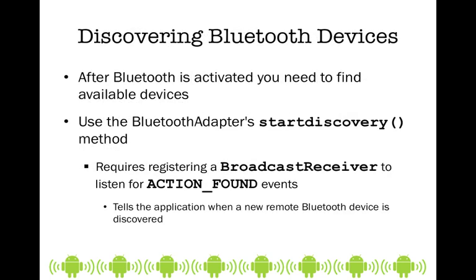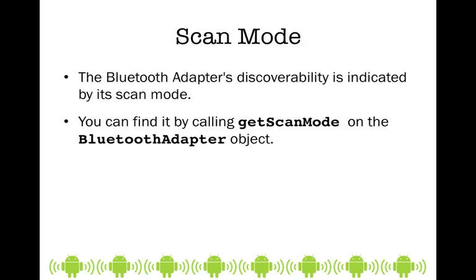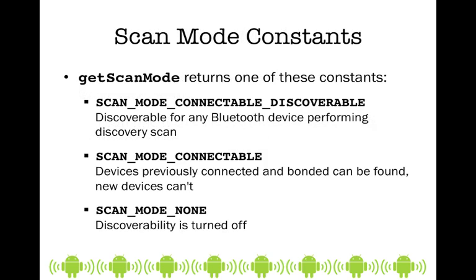Once Bluetooth is turned on, we need to find other devices. We use the Bluetooth adapter's start discovery method and the broadcast receiver registration to listen for action found events, which will tell our application that a new remote Bluetooth device has been found. There are different ways of scanning for discoverability, and we use the get scan mode method from the Bluetooth adapter object. There are different scan mode constants: scan mode connectable discoverable, scan mode connectable, and scan mode none.